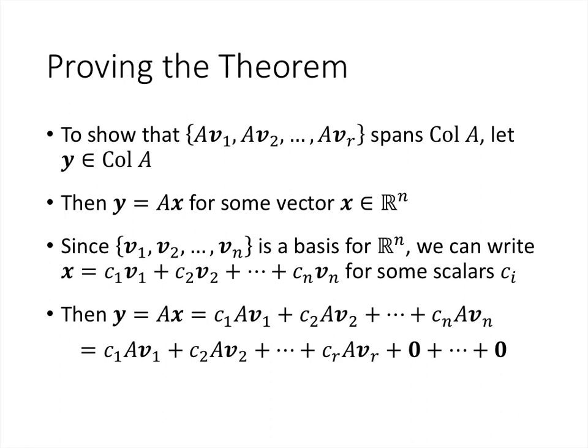All that remains is to show these vectors span the column space of A. We choose an arbitrary element y in the column space, so y = Ax for some x in Rⁿ. Since V₁ through Vₙ is a basis for Rⁿ, we can write x as a linear combination of the Vs. Then y = A times that linear combination. Since A·vᵢ = 0 for i > r, those terms vanish, and y is a linear combination of the Avᵢ's, so they span the column space.